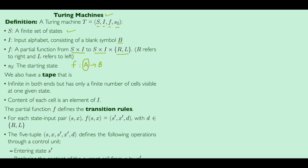For a Turing machine, we also have a tape that is infinite in both ends but has only a finite number of cells visible at any one given instant of time. The content of each cell is an element of the input alphabet I. This partial function defines the transition rules.